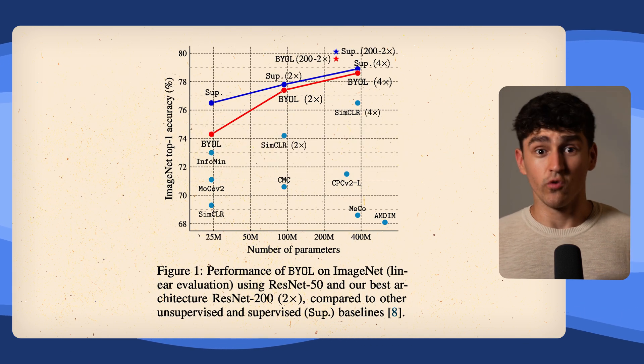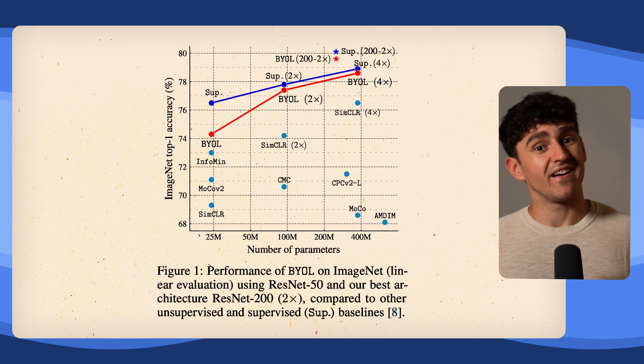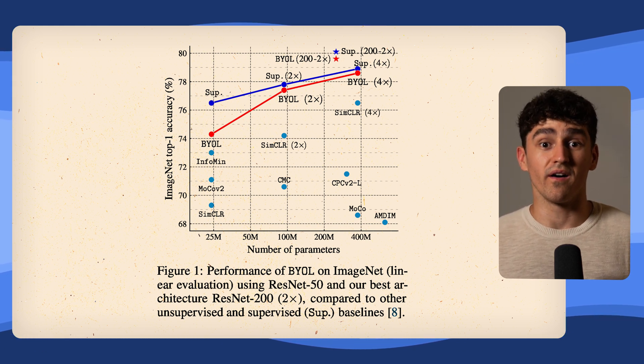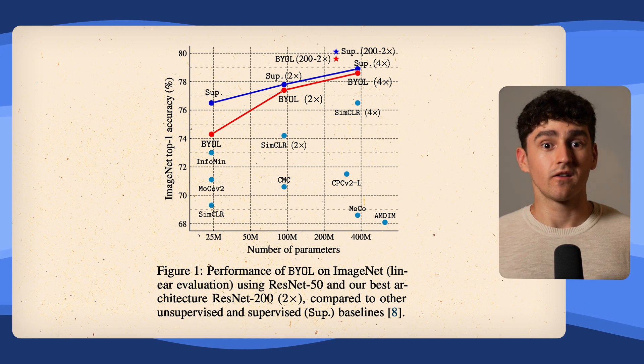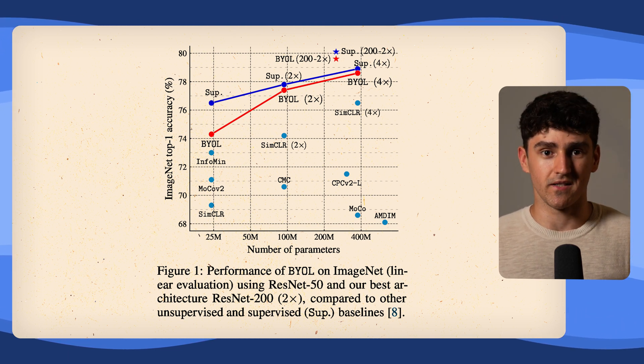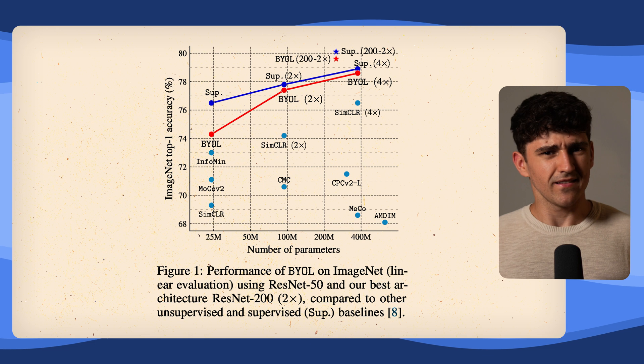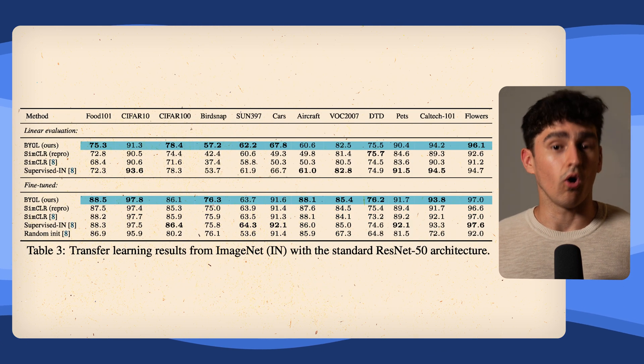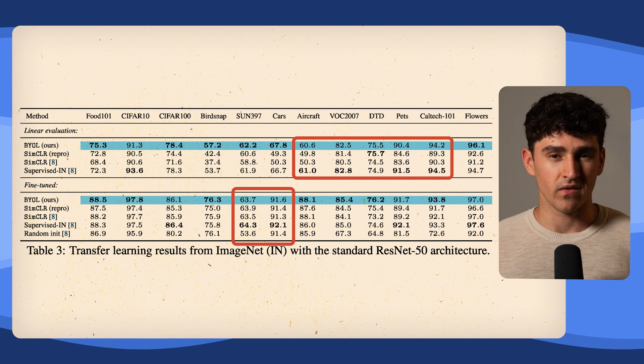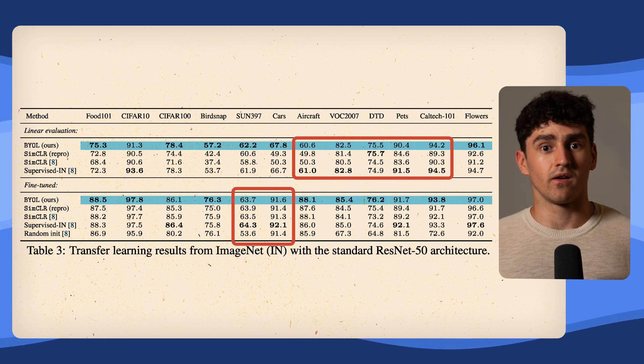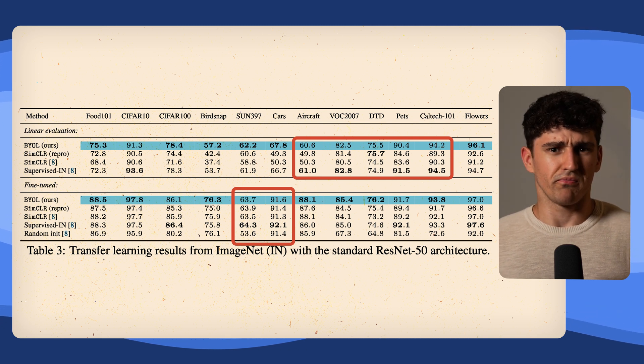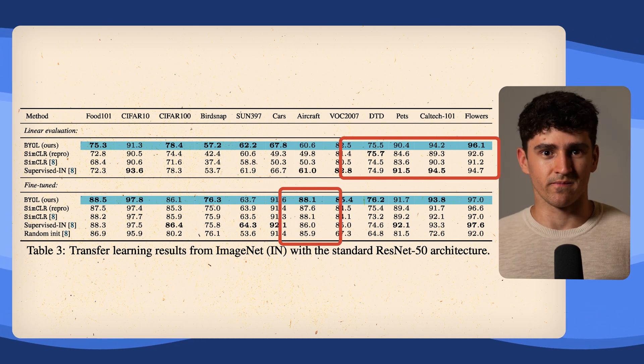Training a ResNet-50 using this framework again and evaluating on ImageNet, of course, outperforms all other unsupervised baselines, including our previously discussed SimCLR, and comes surprisingly close to the fully supervised models. This doesn't mean that BYOL always outperforms other models. When pre-training on ImageNet and looking at transfer learning results across different benchmarks, we can see that BYOL doesn't always perform the best.